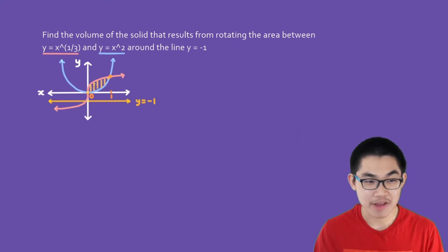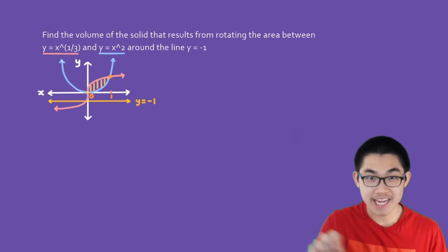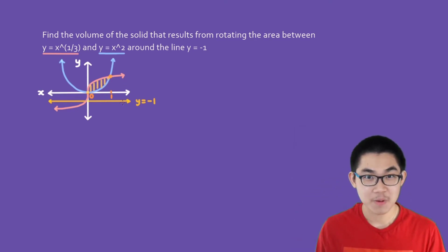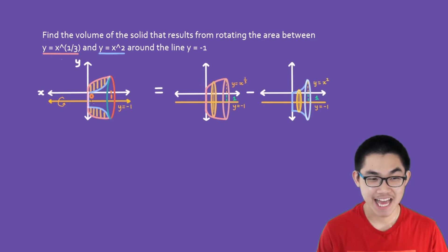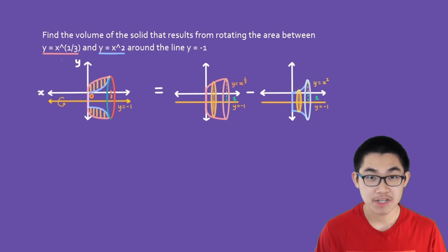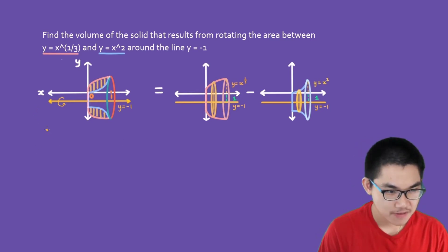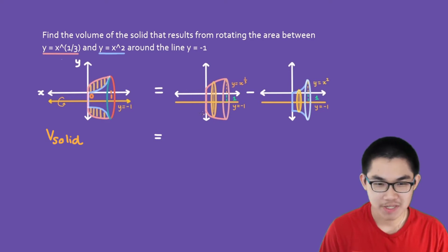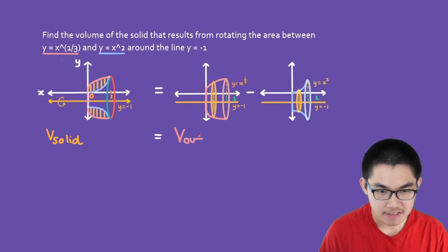Imagine you take the area between these two curves and rotate it around the yellow line. What kind of object are you going to get? You're going to get something like this. To find the volume of this three-dimensional solid, all you have to do is take the volume of the outside function — which is the pink function — and subtract the volume of the inner function, which is the blue function. The volume of this solid equals the outside function minus the volume of the inner function.